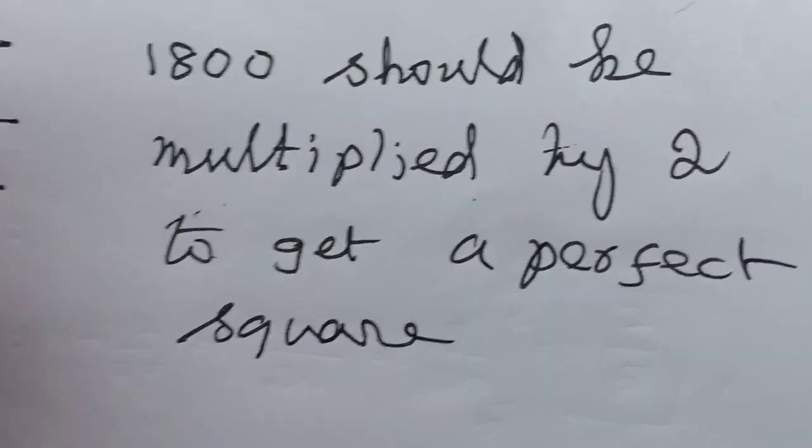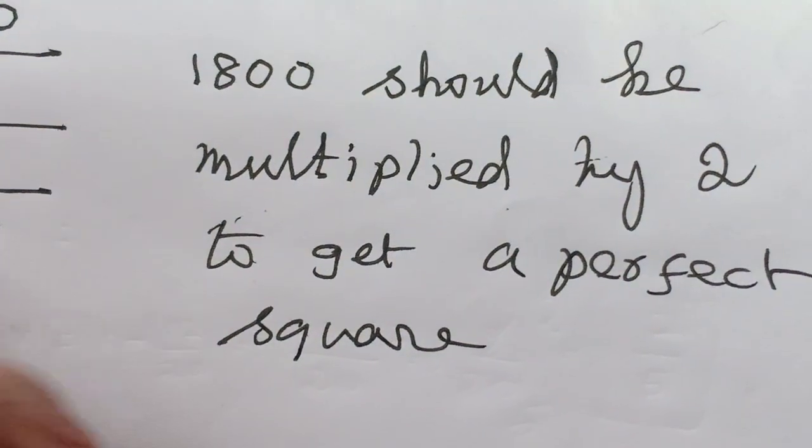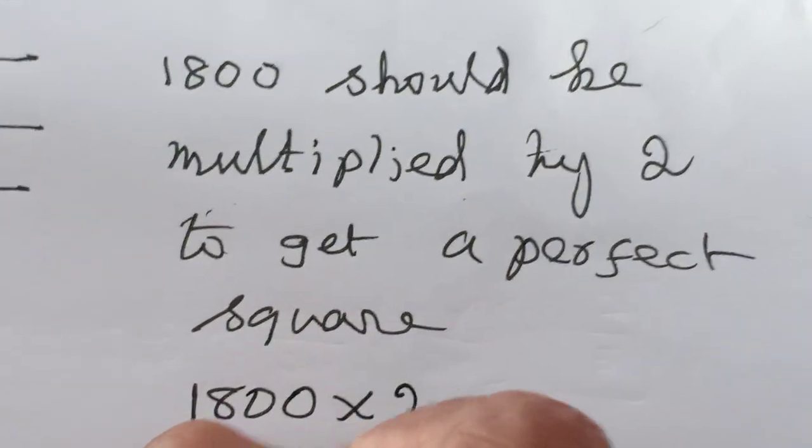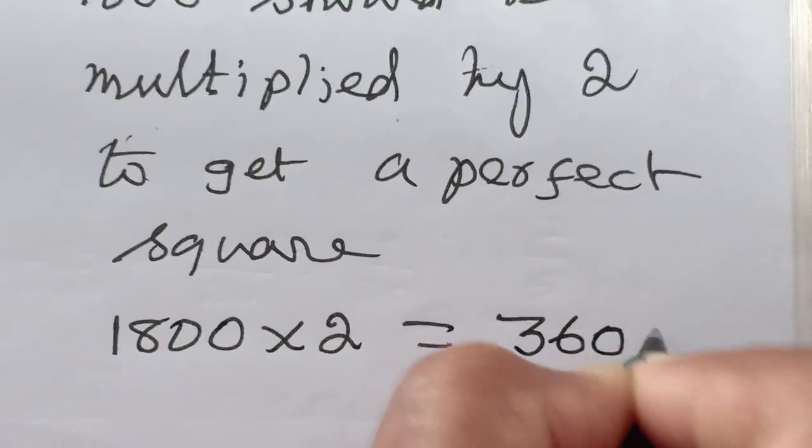This is not a perfect square number because 2 does not have a pair. So 1800 into 2 equal to 3600.